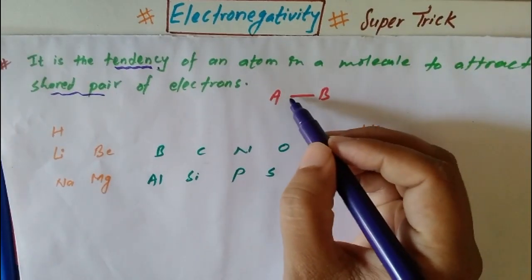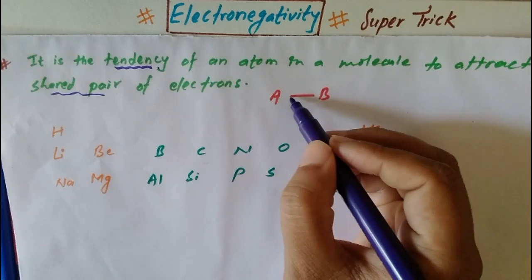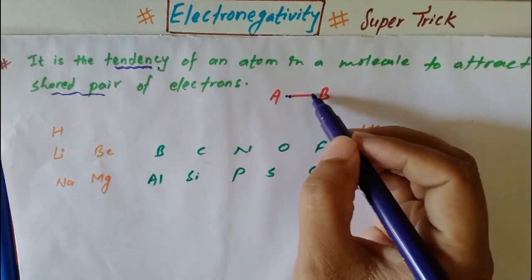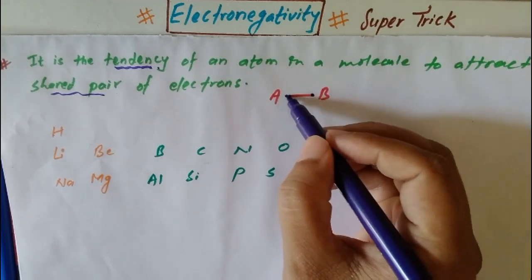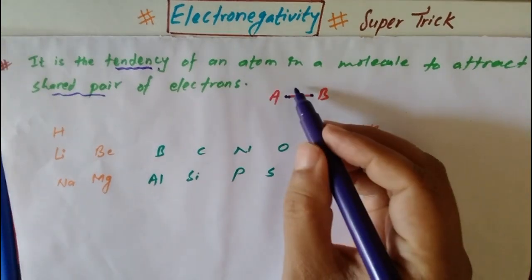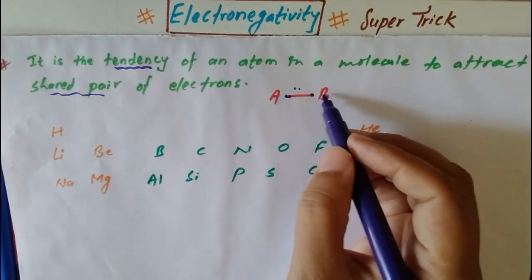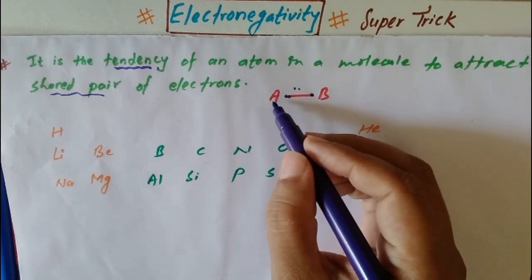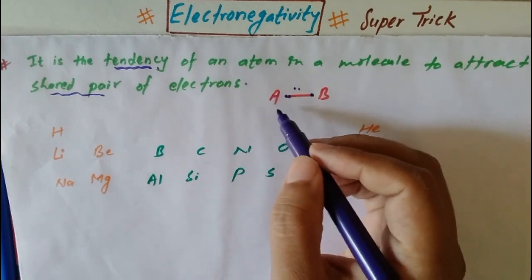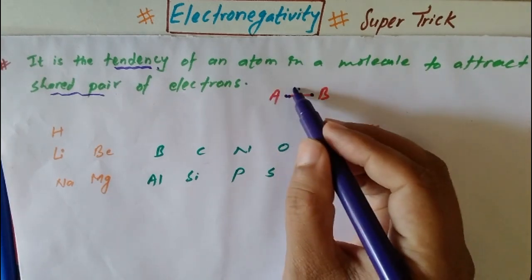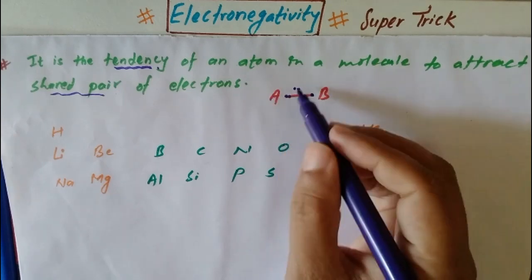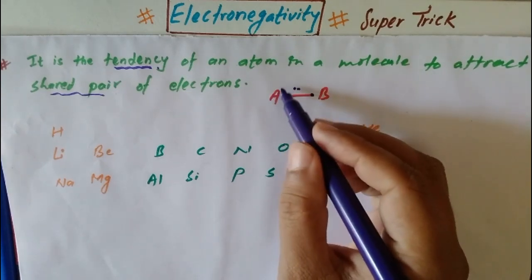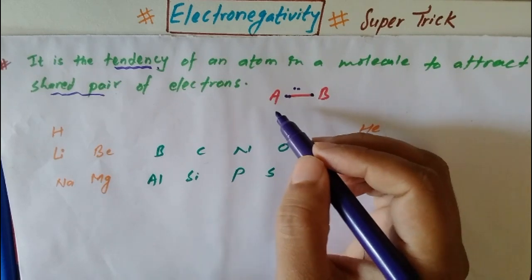This is a bond — the bond involves sharing. Two electrons are sharing in bond formation. The two electrons in this bond, one atom can attract electrons. This is the concept of electronegativity: if atom A or B is able to attract, then electronegativity is very important.